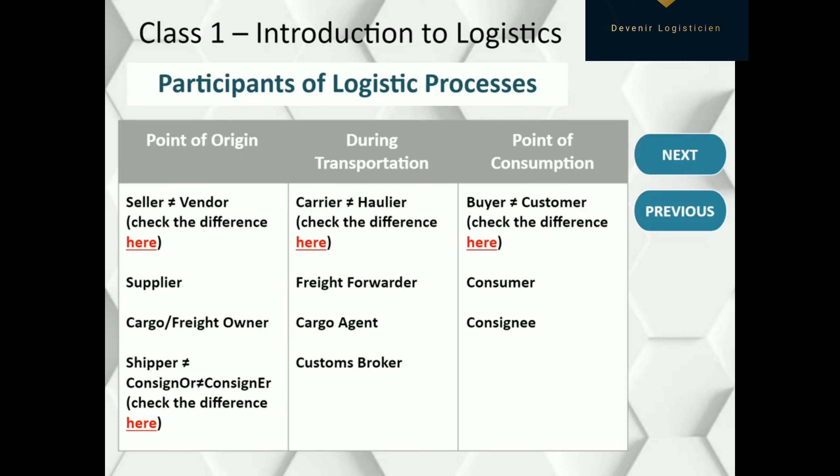Let's look at the first column first. Usually, each transportation starts with buying the goods you need. So there is a seller or vendor of the cargo on the one end, and the buyer on the other. Both seller and vendor are продавец.